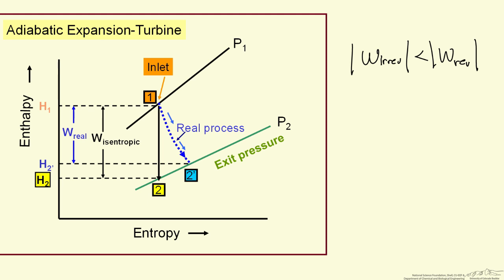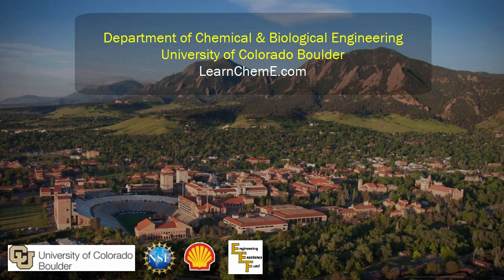So when we have expansion, we are getting less work out in absolute value. When we are doing compression irreversibly, we have to put more energy in. These are the key differences between reversible and irreversible processes for compression and expansion.